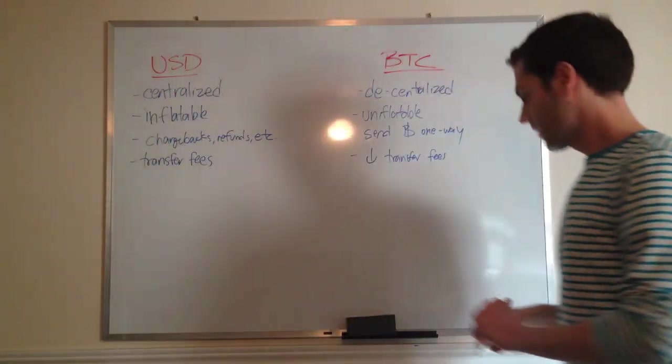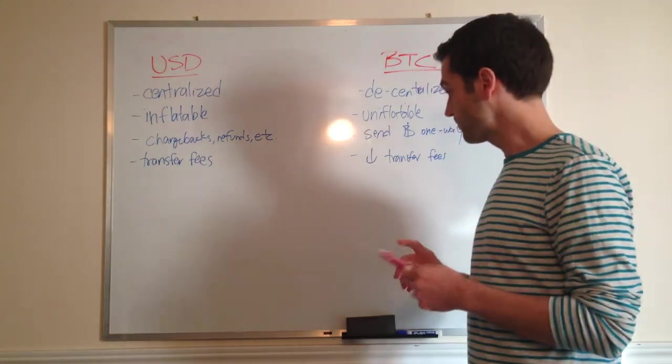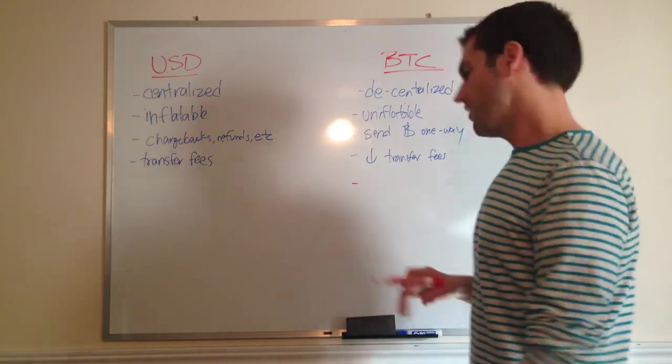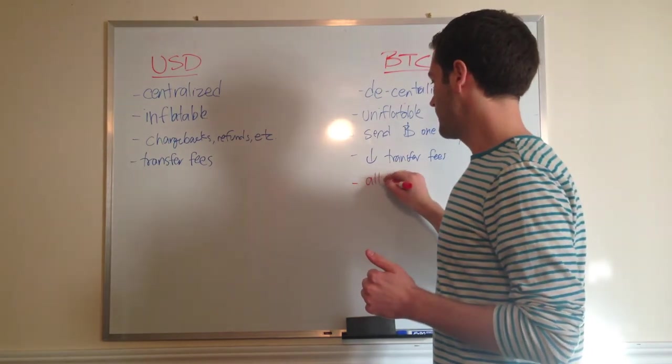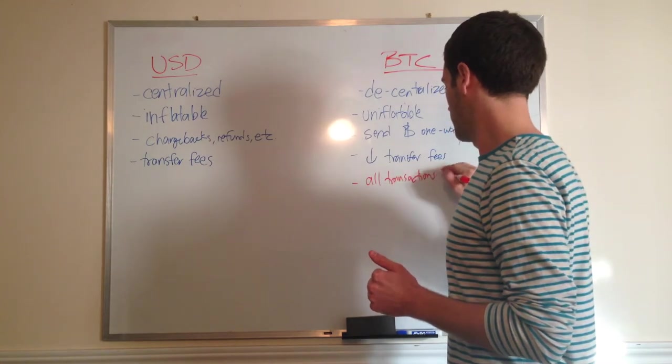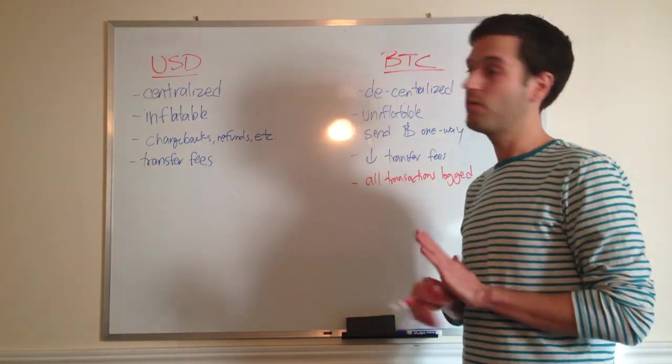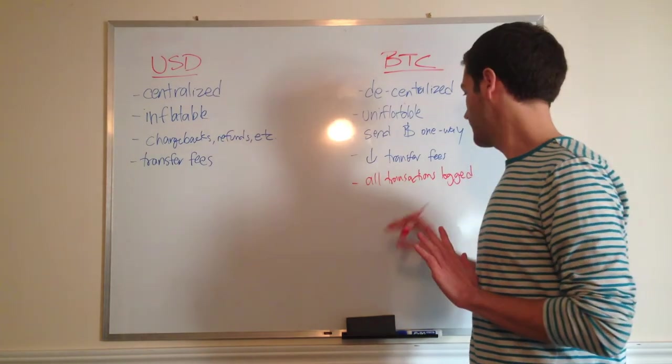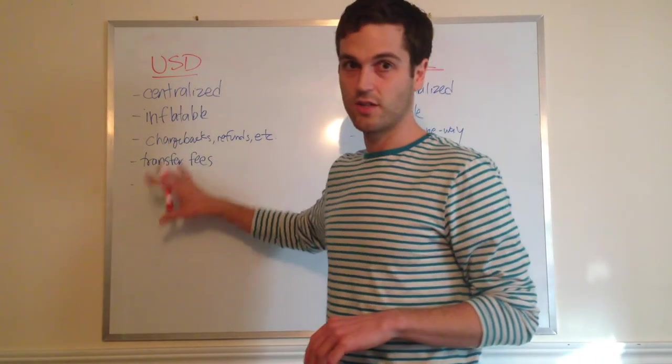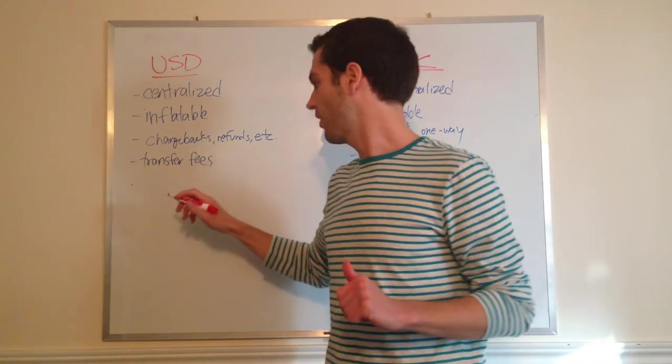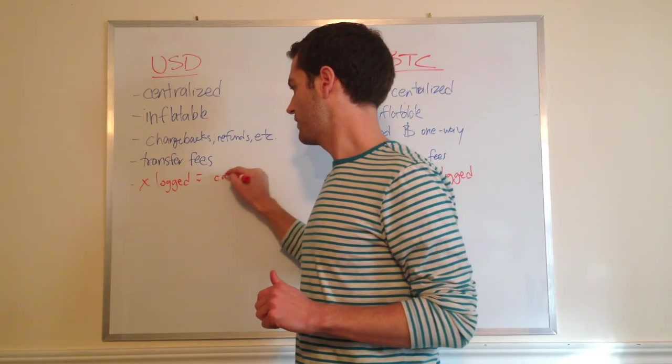A lot of people will also tell you Bitcoin has what's called a blockchain. A lot of the media is telling you that Bitcoin is totally anonymous. Though there are some elements that are true and some new software coming out that makes it more anonymous, for the most part all transactions are logged. That's in the blockchain.